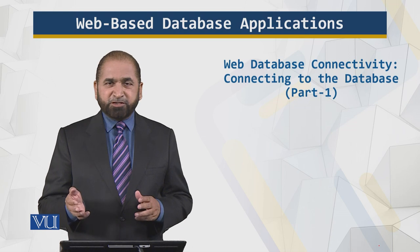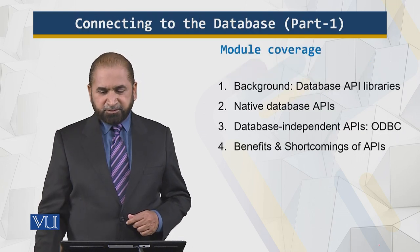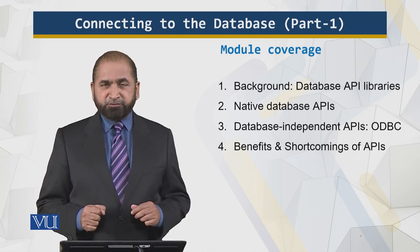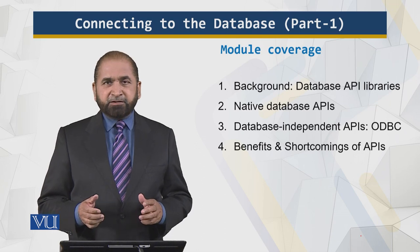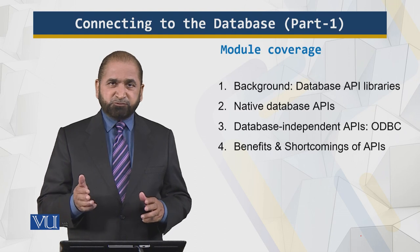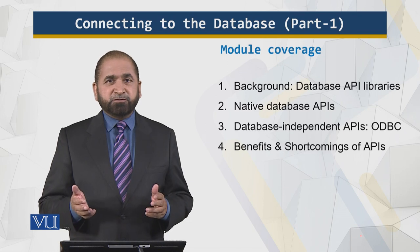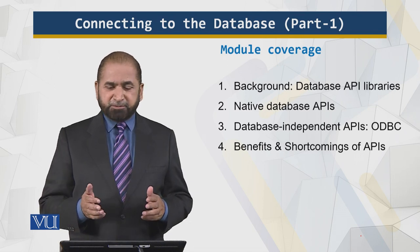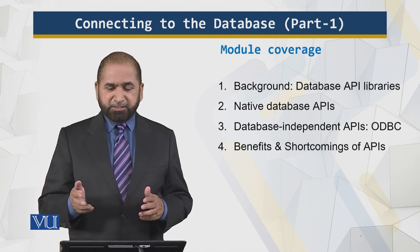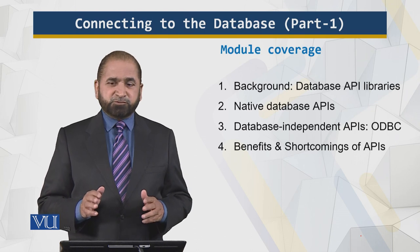Let me first tell you briefly about what I will cover in this module. I will briefly talk about APIs — application programming interface libraries — native database APIs, which are related to certain specific databases, and of course database independent APIs, which can work across databases using something called ODBC. I will explain this and what are the benefits and shortcomings of APIs.